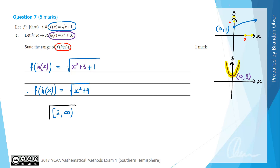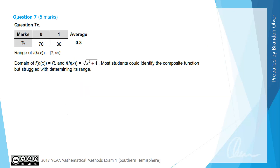That is the answer to part c. From the examiner's report, 30% of students got that correct. The examiner notes that most students could identify the composite function rule, but did struggle with determining its range — either because they couldn't interpret what the rule was giving them, or they couldn't work through what values come out of h of x and what that leads to in terms of the y values of f of x in the composite function.